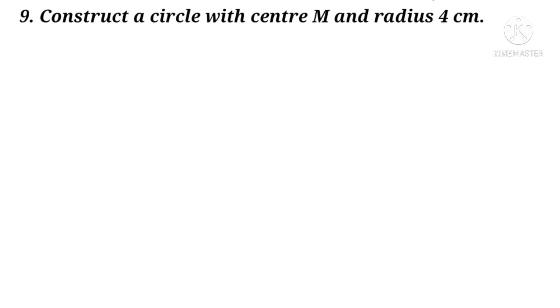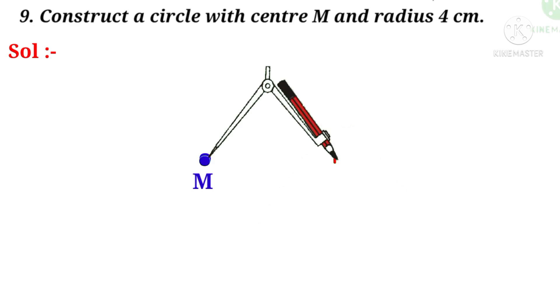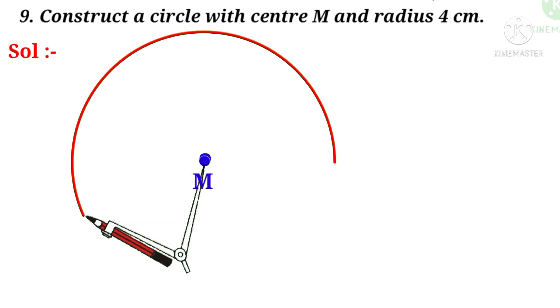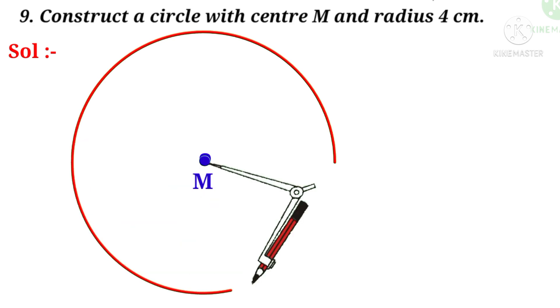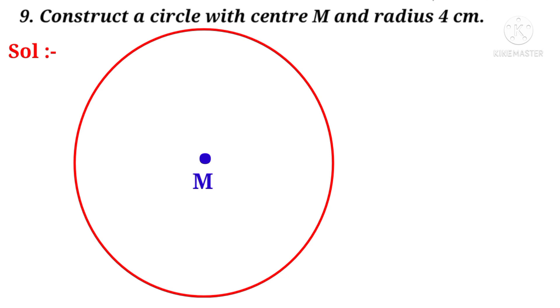Now ninth question. Construct a circle with center M and radius 4 centimeters. Solution: Take a point and name it as M. Take the scale and take the compass and extend it from 0 to 4. Pointing pencil. Now put the sharp end of the compass on the point M and now draw a circle around M. Then we get a circle with center M. Now let us take a point P on the circle. Join the center M and P. Now MP is 4 centimeters. So the radius R is equal to MP is equal to 4 centimeters.